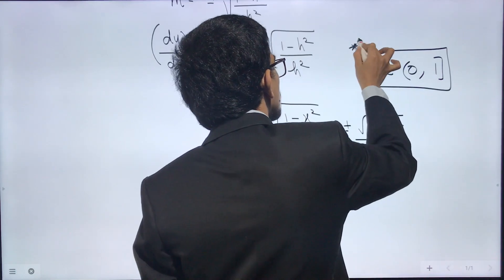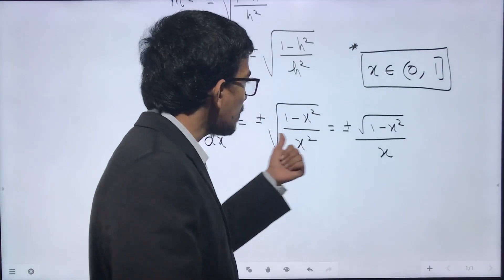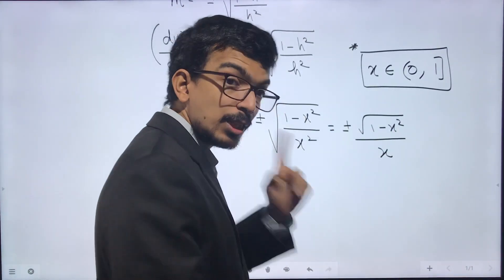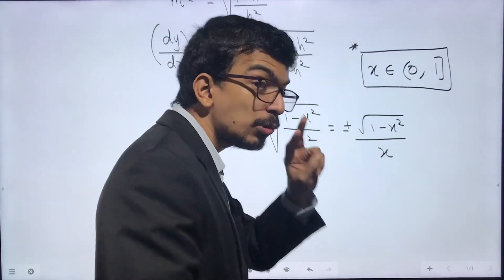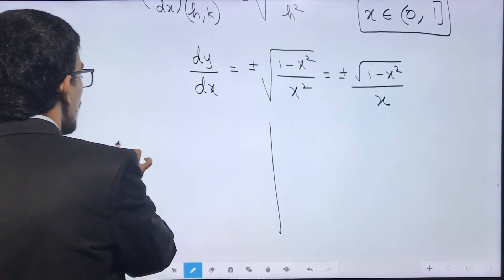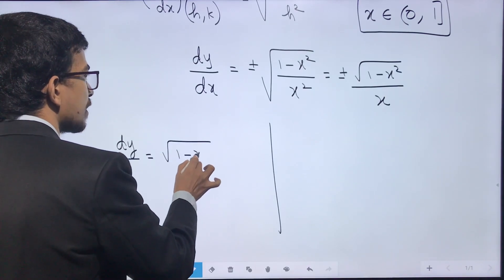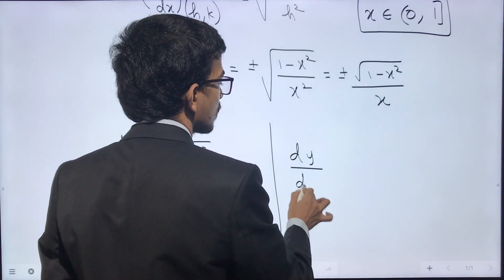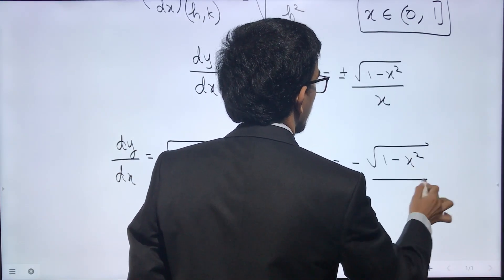We have two cases: dy/dx = +√(1 − x²)/x or dy/dx = −√(1 − x²)/x. We need to determine whether the positive sign, the negative sign, or both are valid. The options B and D correspond to these two cases respectively.